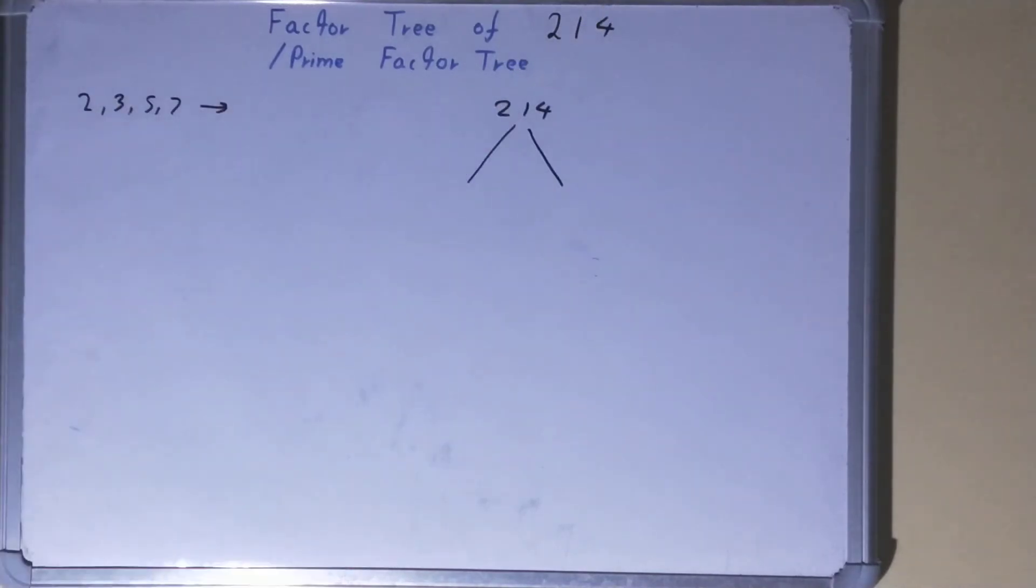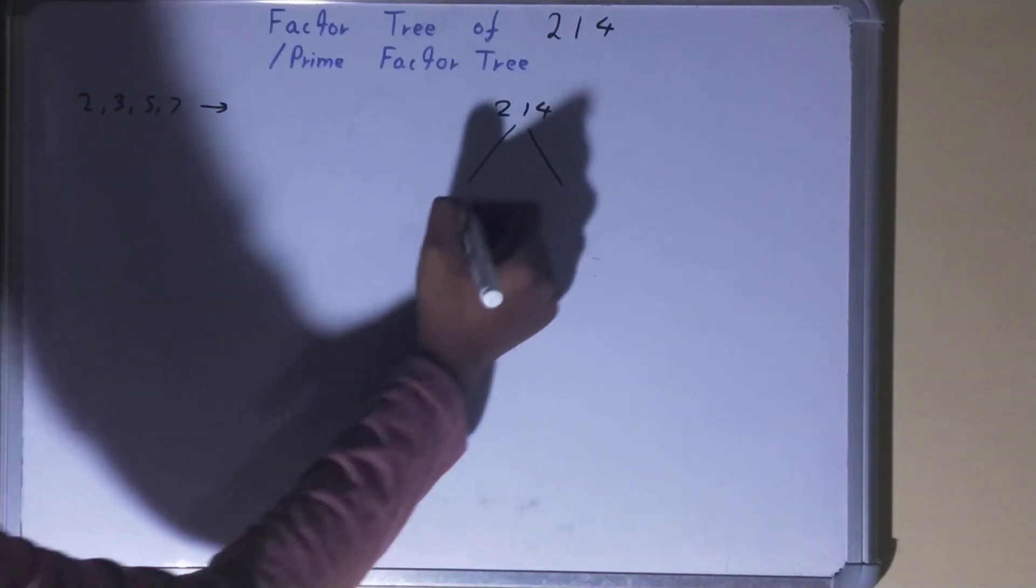of 2, or sets of 2, and the rule is one of the numbers should be a prime number. So because of this, we check: is the number 214 divided by 2? The answer is yes. So one of the numbers